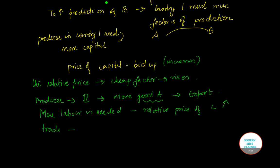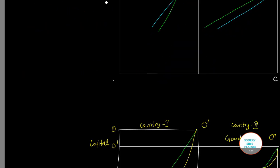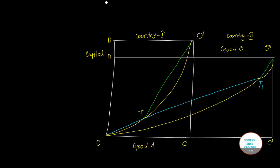Hence, trade leads to an increase in both countries of the price of the abundant factor - the relatively cheap factor - until factor prices are the same in both countries. Now the question is, if you remember the figure that we did last time, are we always able to find the trade point such as T and T dash as we can see in this particular figure?